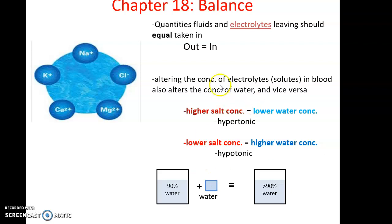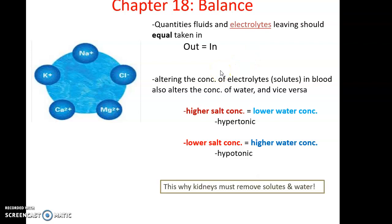A lower salt concentration means there's a higher water concentration. We always want the concentration to equal what is isotonic and best for our cells. This is why kidneys are involved in maintaining the appropriate composition of our blood by removing both solutes and water, so that the overall concentrations in the blood remain constant.